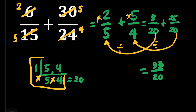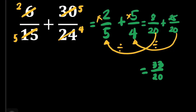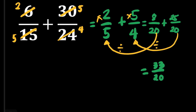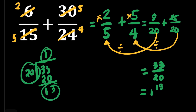This is an example of an improper fraction, so we have to change it to a mixed number. How do we change an improper fraction to a mixed number? Check the description box for the link to that tutorial video. We will now divide 33 by 20. How many 20s can we find in 33? 1 times 20 is equal to 20. 33 minus 20 is 13. So our answer is 1 and 13 over 20, and that's our final answer.